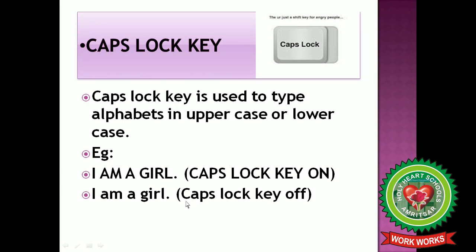When you press the caps lock key again, it will be off, and when you start typing you will get all the letters in lowercase, or small letters. So caps lock key is a toggle key — it is used to type alphabets in uppercase or lowercase.